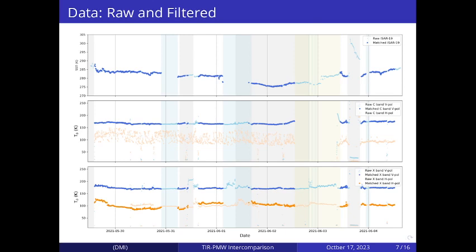And this is a plot of the raw data and in dark colors, the final matchup data set for the analysis. On the top panel, we see the SST data from the infrared instrument and the second ISAR being of an older generation failed during the deployment. So unfortunately, the data had to be discarded.